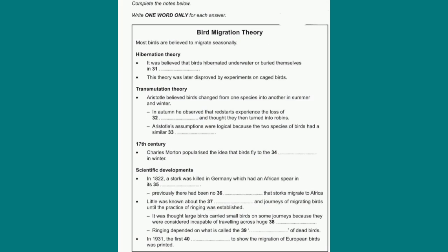Bird migration has been studied over many centuries through a variety of observations, but until relatively recently, where birds went to in the winter was considered something of a mystery. The lack of modern science and technology led to many theories that we now recognise as error-filled and even somewhat amusing.